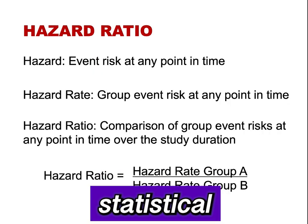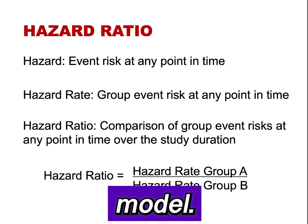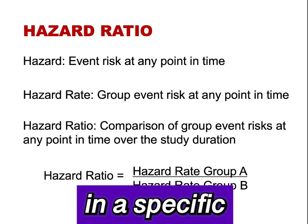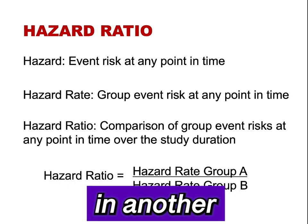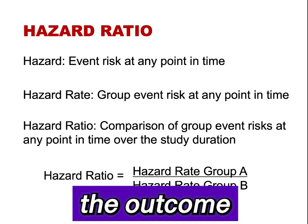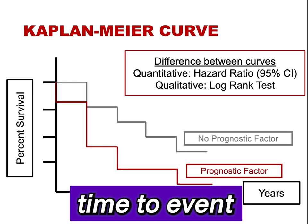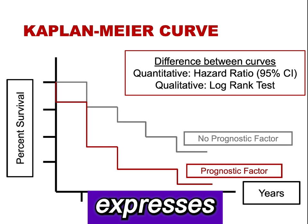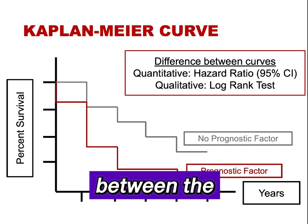The term hazard comes from the statistical technique used in time-to-event analyses called Cox Proportional Hazard Regression Analysis. A hazard is the risk of an event at any point in time over the study period. A hazard rate is the risk of an event at any point in time in a specific group over the study period. A hazard ratio is the hazard rate in one group divided by the hazard rate in another group at any point in time over the study period. Kaplan-Meier curves are the most common form of time-to-event analysis, and the hazard ratio expresses the difference between two curves at any point in time as a quantitative measure.